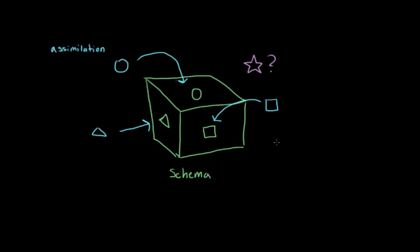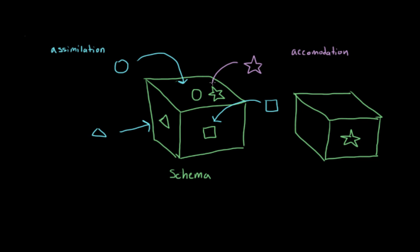In that case, we're forced to modify our existing schemas. So maybe we'll add a star-shaped hole to our box. But that might not be possible, and maybe we have to construct a brand new schema in order to take this information into account. And this is what we refer to as accommodation. So we can accommodate either by adjusting previously existing schemas or by creating new ones.